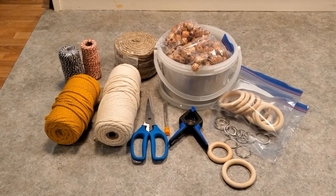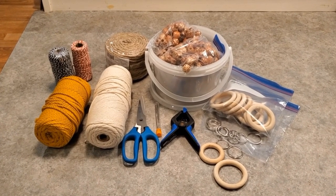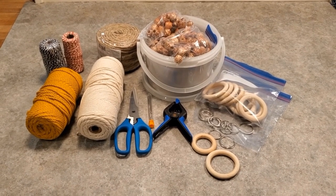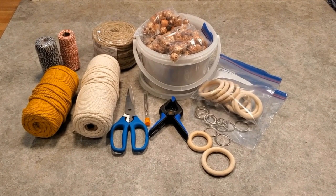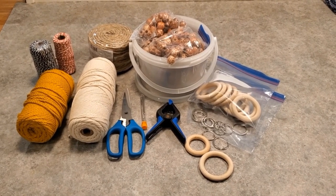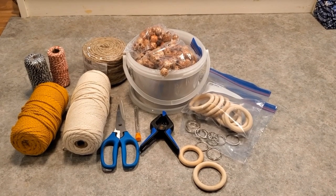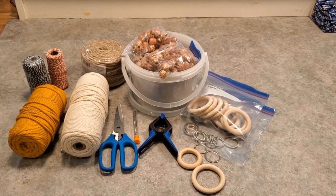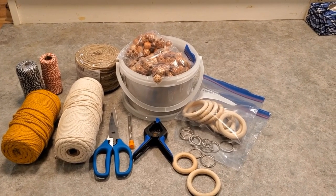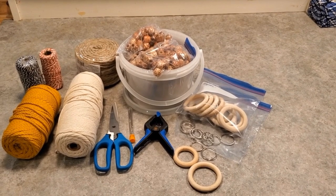Before I begin any task, it's important to me to have everything I'll be needing ready and at hand. Here are my supplies I use when making macrame hangers. I have my cord, I have some jute, gives me some choices, then I have my scissors, my darning needles, a bucket of beads, a clamp, and then my rings. So let's get started.